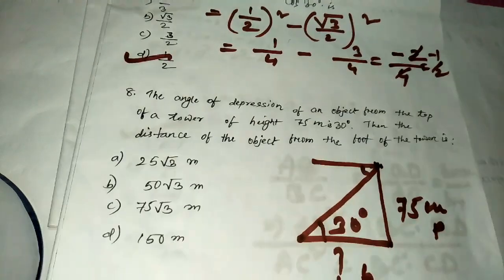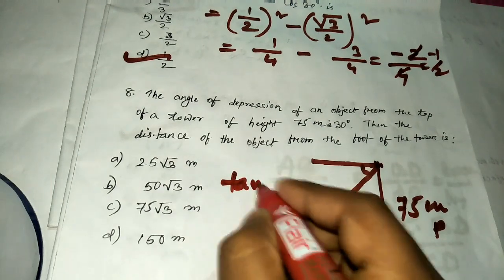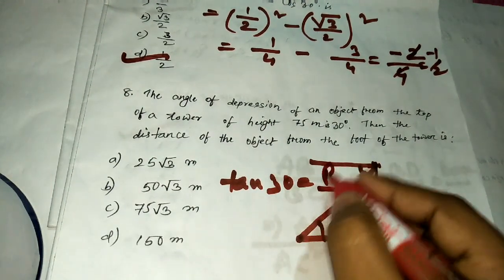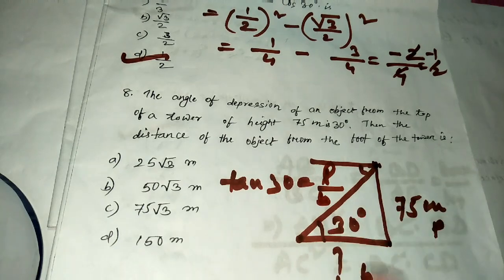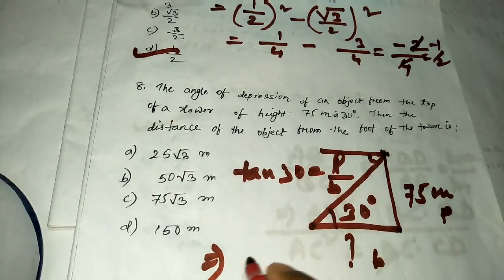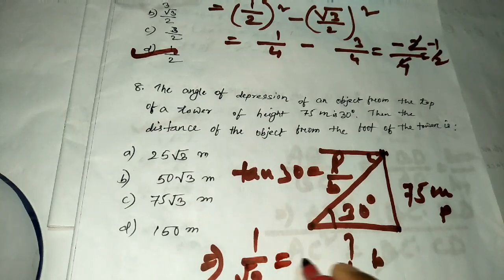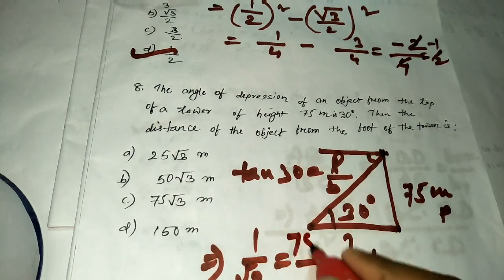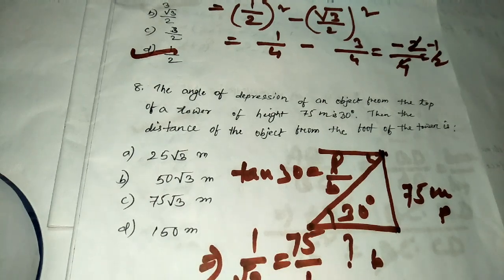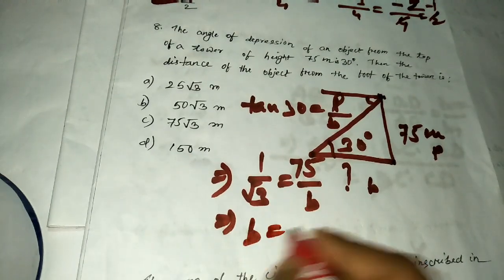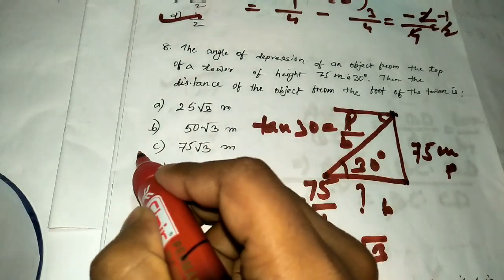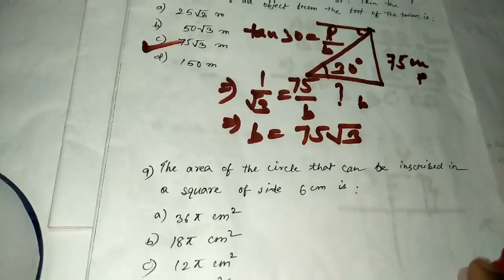The perpendicular is 75 m and we need to find the base. Using tan 30° = perpendicular/base: tan 30° = 1/√3 = 75/b, so b = 75√3. The answer is 75√3 m, which is option C.